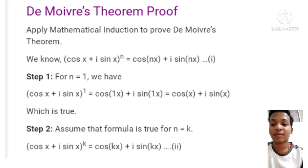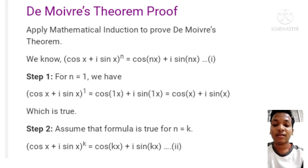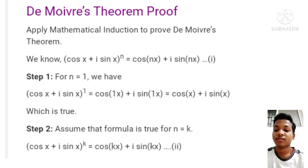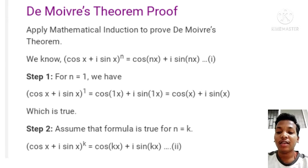Step 1: For n equals 1, we have cos x plus i sine x to the power 1, which equals cos(1·x) plus i sine(1·x), which simplifies to cos x plus i sine x. This is true.